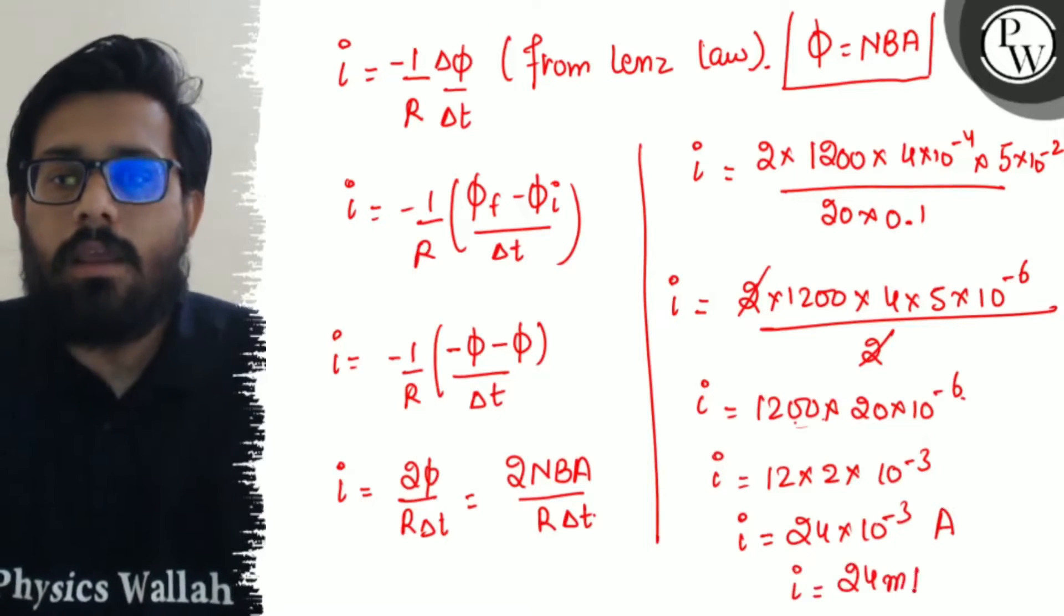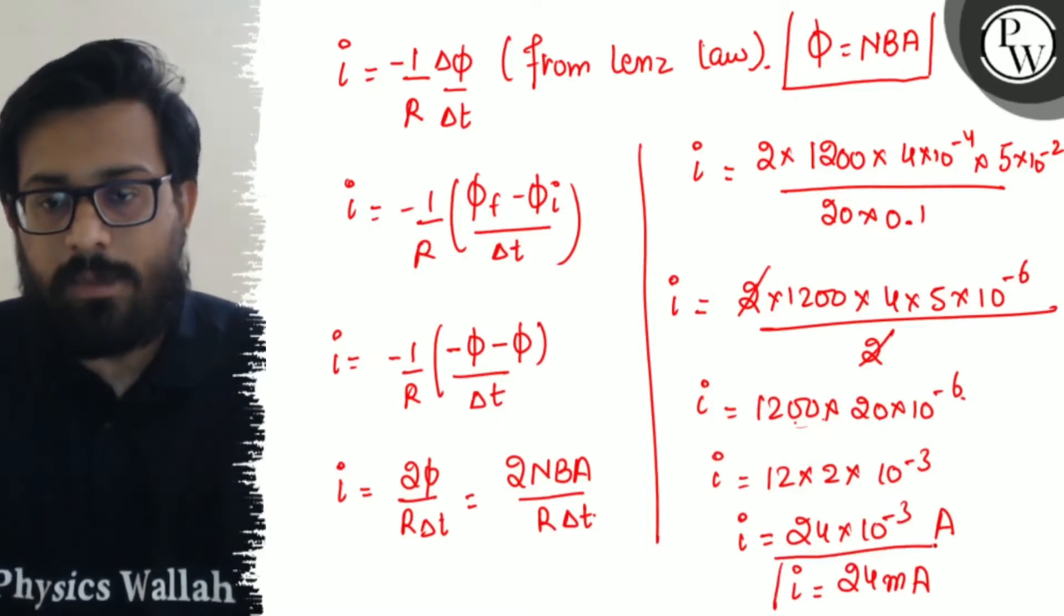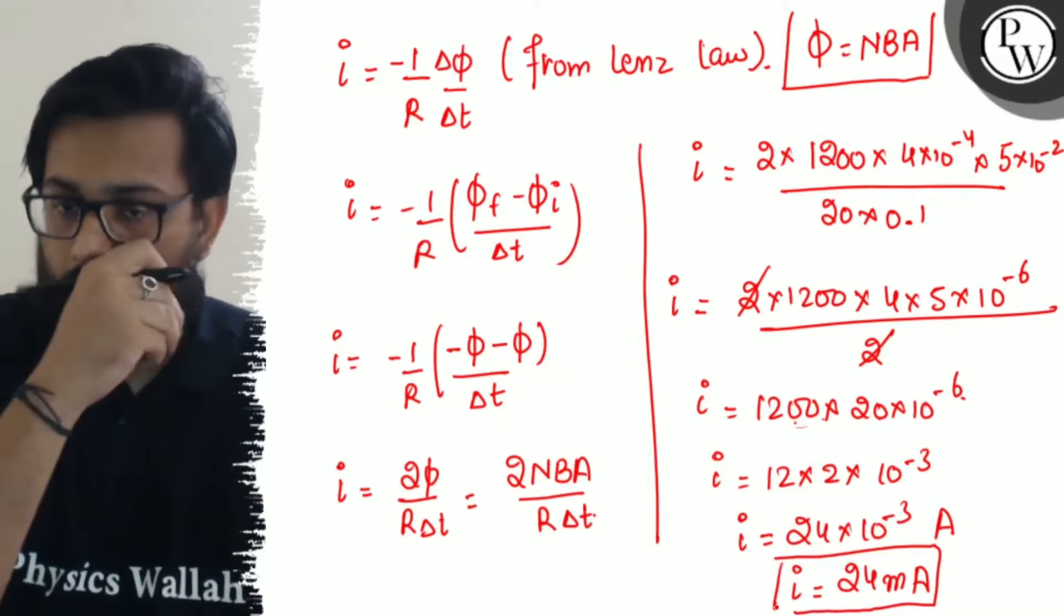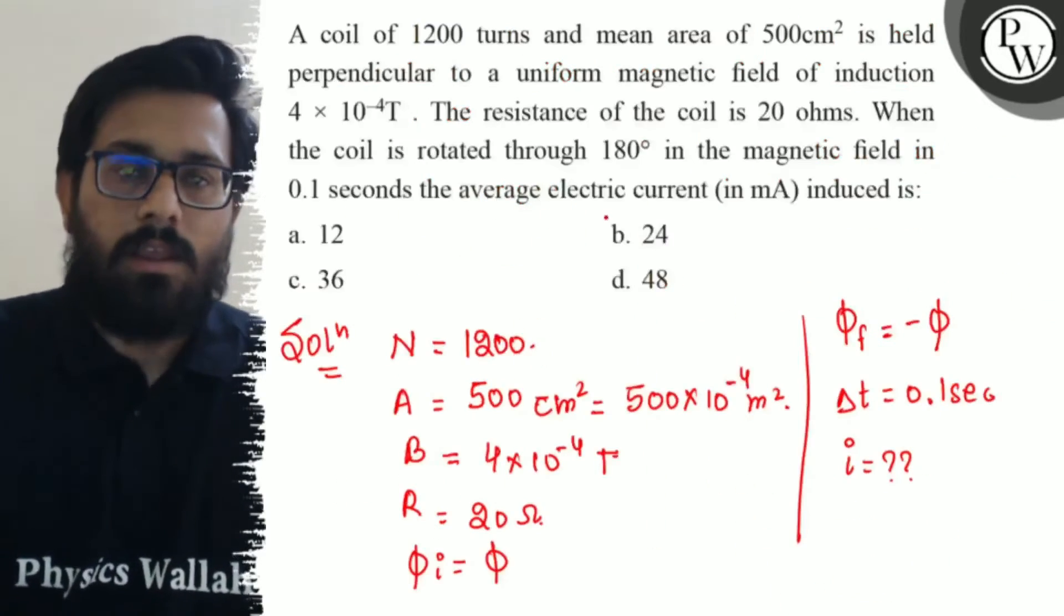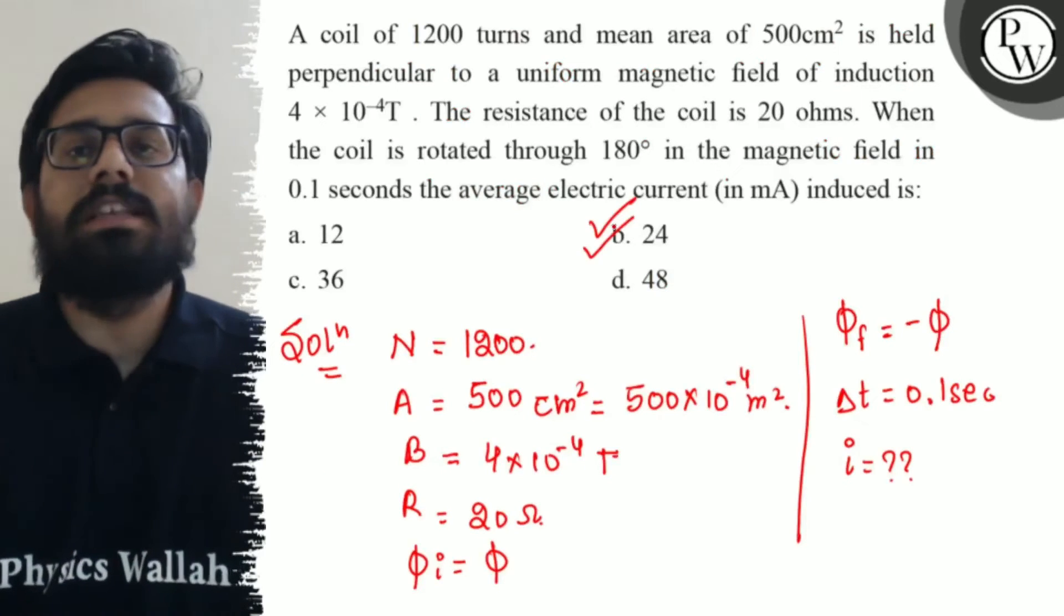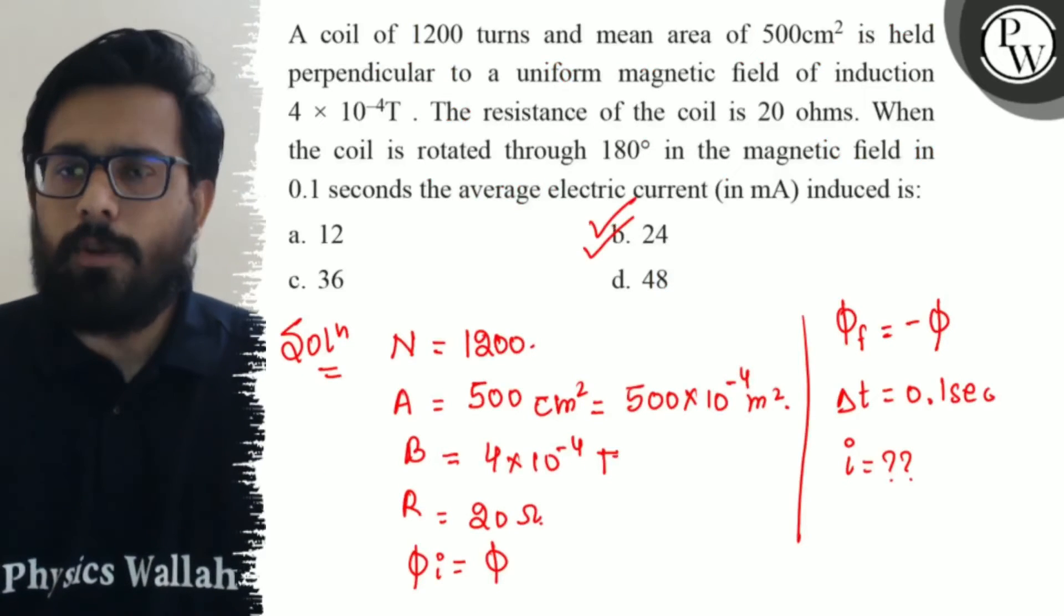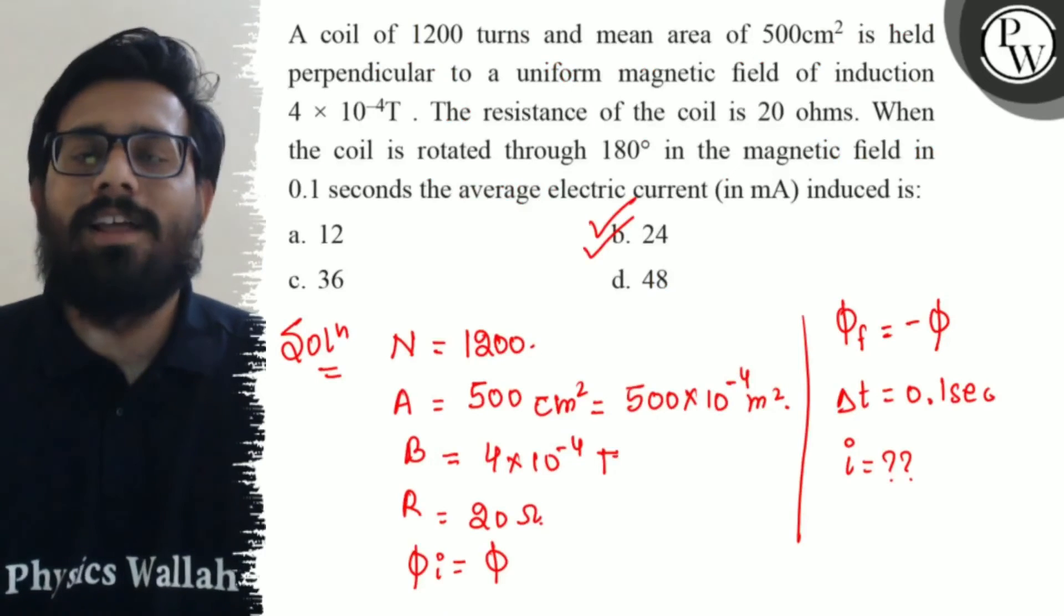24 milliamperes. We needed the current in milliamperes anyway. So our answer is 24 milliamperes, which is option B. Option B is absolutely right, and I hope you got the concept of this question. All the very best.